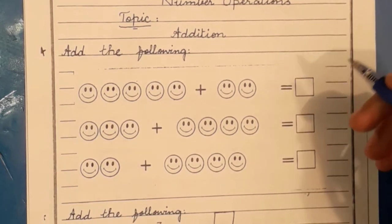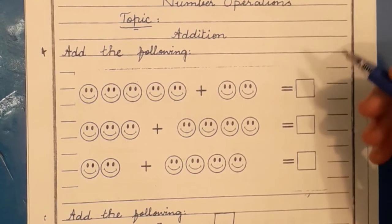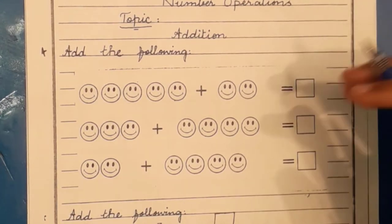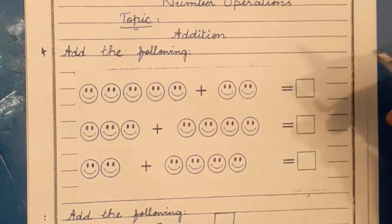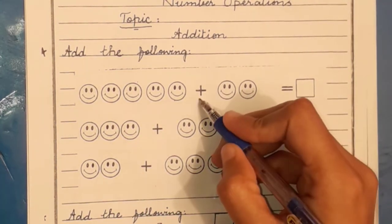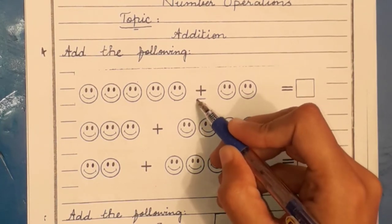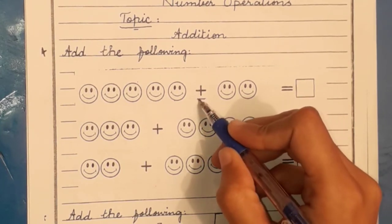When you have a total of numbers or objects, you have to find a total of numbers, so we add them. What do we do to add? Numbers and objects count. You are looking at smiley faces and you are looking at the sign. We call it addition sign. Which sign is this? Addition.